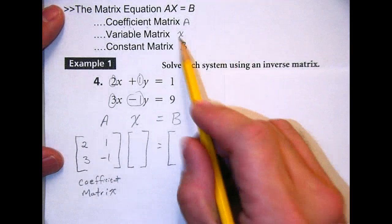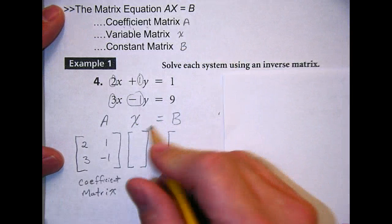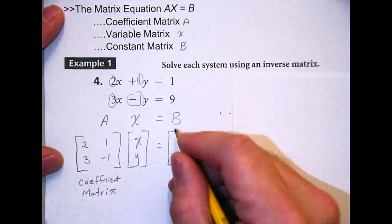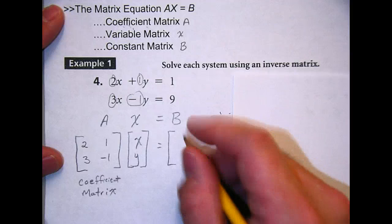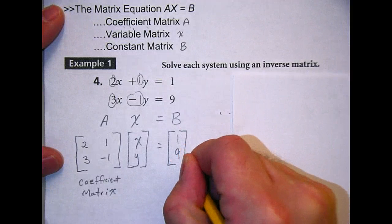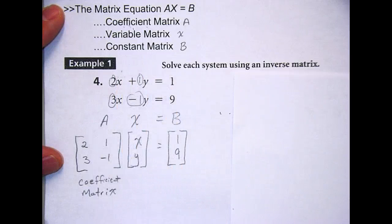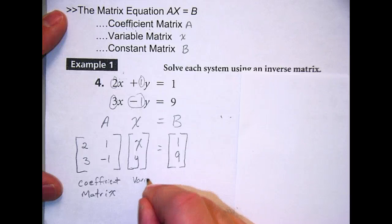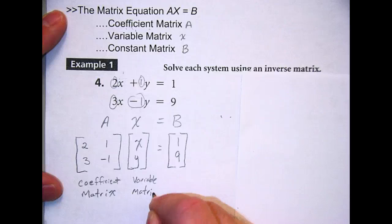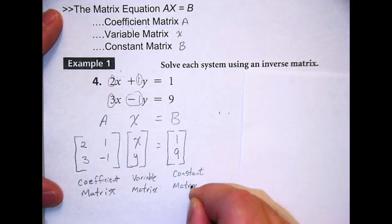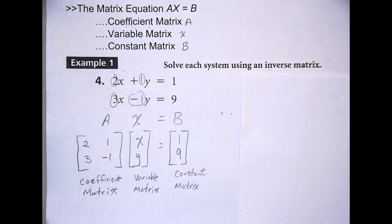Matrix X is our variable matrix. So we only have two variables, X and Y. And matrix B is our constant, meaning there aren't any variables attached. So 1 and 9. So in order to do this, you have to have your X's and Y's on one side and your constants on the other. Okay, that's what we have. So we have our variable matrix. So if you're taking good notes here, keep in mind at the end of the semester, when you have forgotten what's going on here and you need a little reminder, the best reminder you can have is your own handwriting.